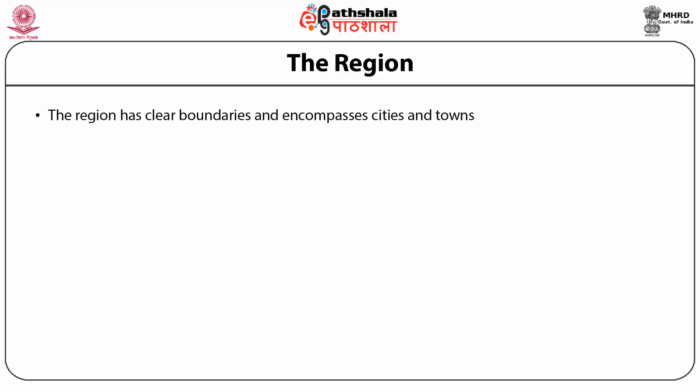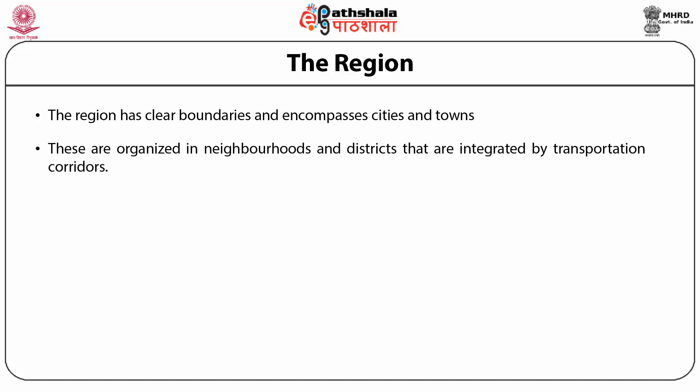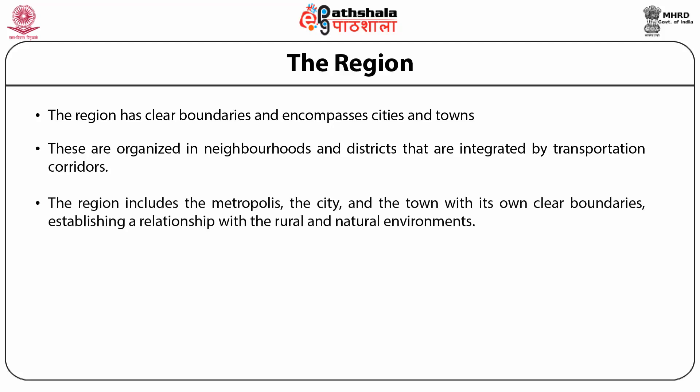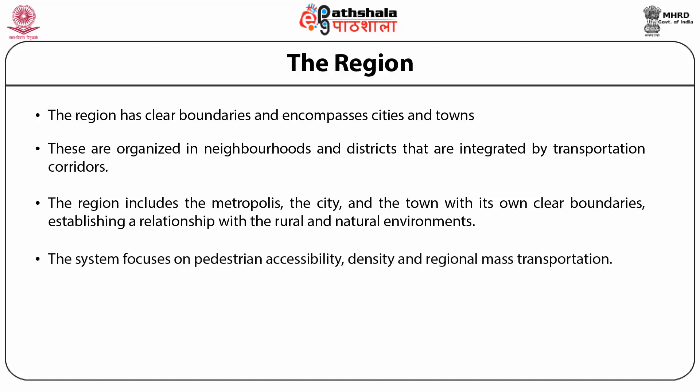The region has clear boundaries and encompasses cities and towns, which in turn are organized in neighborhoods and districts integrated by transportation corridors. The region includes the metropolis, the cities, and the town. Each one has a center and clear boundaries, establishing a relationship with the rural and natural environments. The suburb or city focuses on pedestrian accessibility, density, and regional mass transportation.